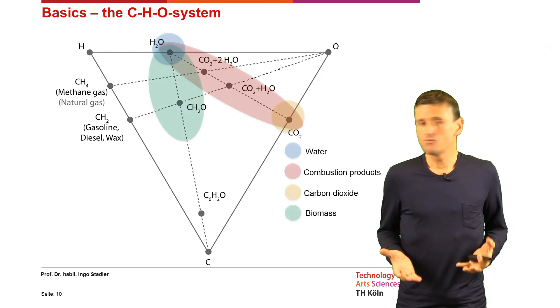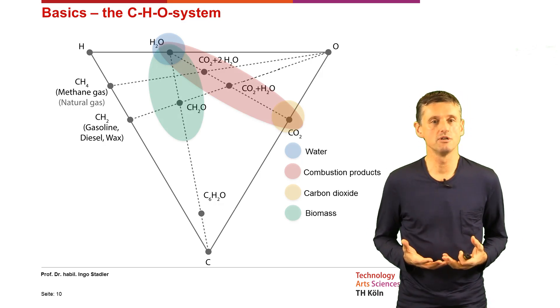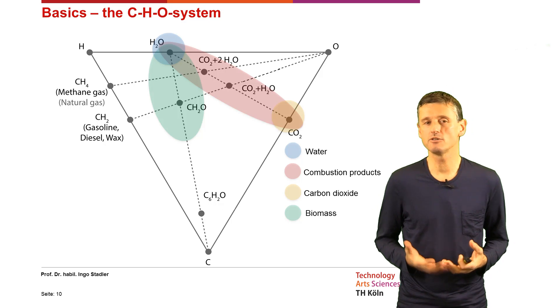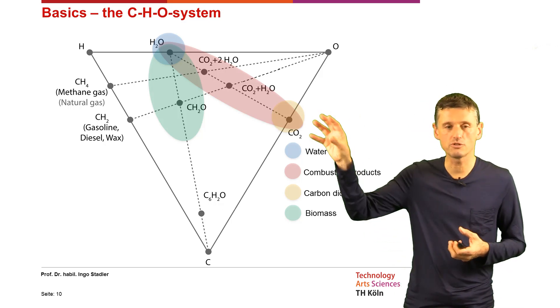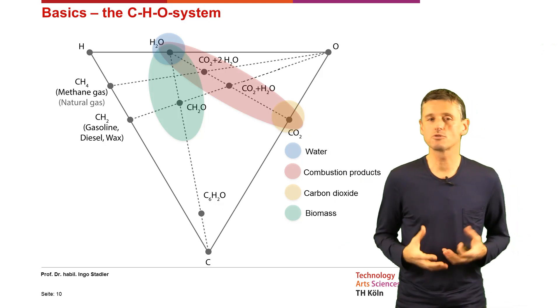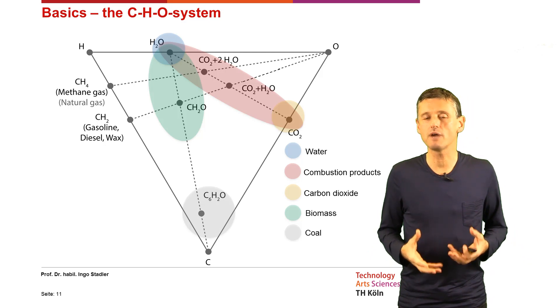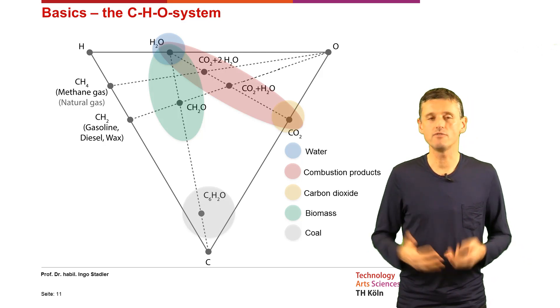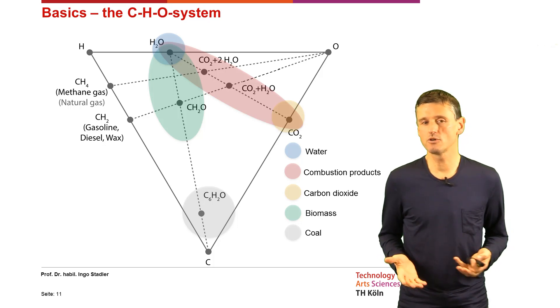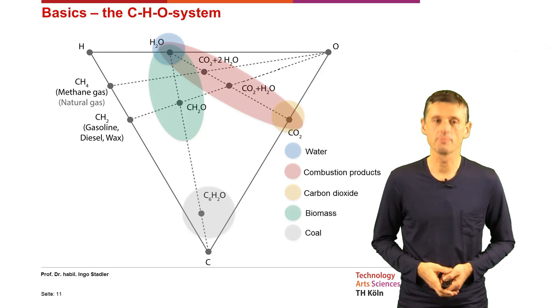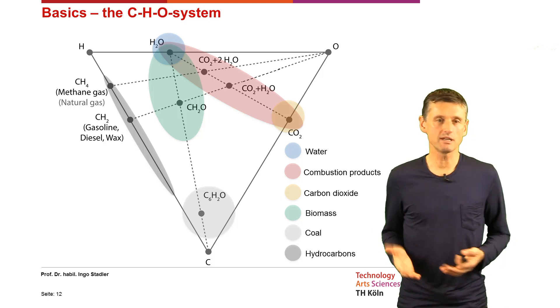When we go for bioenergy, we get all those elements that are on that dotted line going down from water down to carbon. All those green marked elements, they are the bioenergy products. And when we go further down towards the carbon, then we have our coal products.